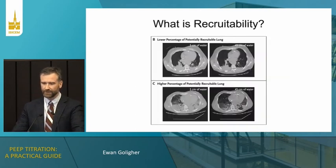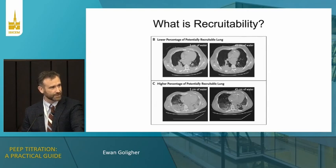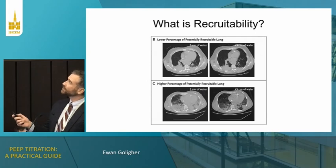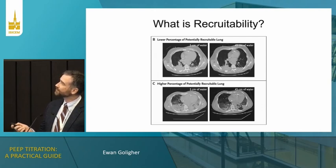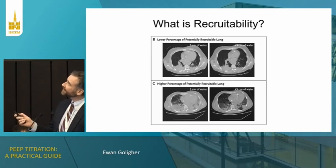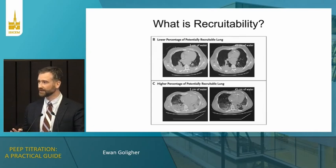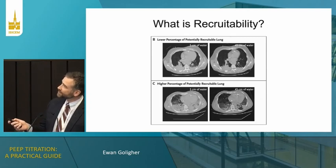When we talk about recruitability, what do we mean exactly? These CT images are helpful to visualize the concept. This is from a famous paper by Luciano Gattinoni published in the New England Journal in 2006, which opened our eyes to the variability among patients in their anatomical and biomechanical response to PEEP. These CT scan images show a patient with a lower percentage of potentially recruitable lung — you can see comparatively small atelectasis at 5 cm H₂O, and at 45 cm H₂O the atelectasis distribution has hardly changed at all. This is a patient who is not recruiting in response to increased PEEP.